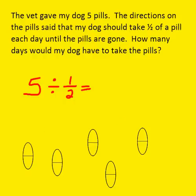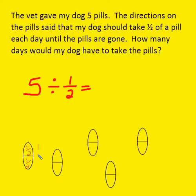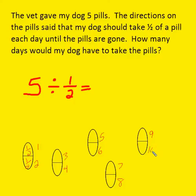Each one of these is one half of my pill, and here's the other one half. So each pill is now cut into half. How many halves of a pill do I have? I can count: one, two, three, four, five, six, seven, eight, nine, and ten.